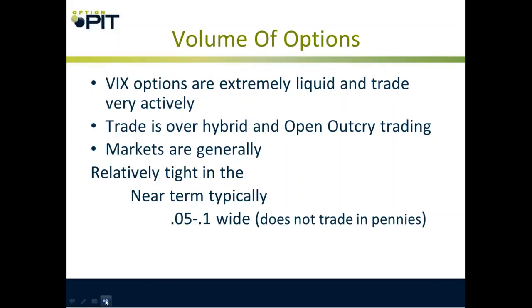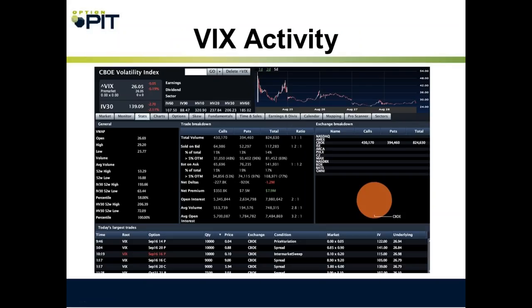These are super tight markets — nickel wide most of the time, dime wide, and the inside market when I get a quote is usually $0.04 wide. VIX option volume on a normal day is about 825,000 contracts, with open interest near $8 million and average volume of $750,000. Last week I sold 5,000 call spreads against something else I was doing — that wouldn't even have hit the big trade screen.